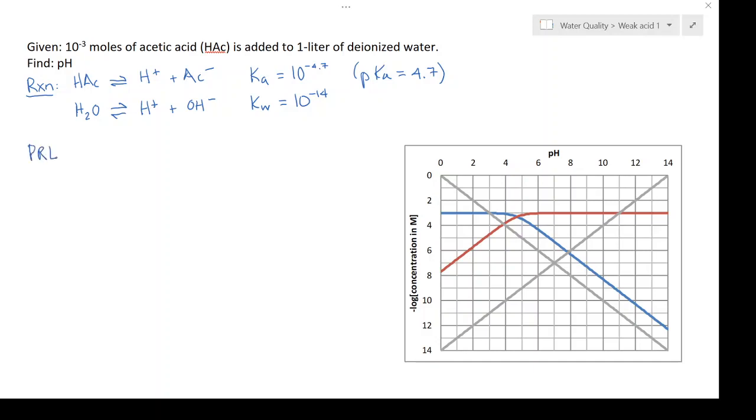To use the proton condition, first you need to write out the proton reference level. The proton reference level is what you start with in the solution. Because this is water chemistry, we always start with water, so that's always going to be in your PRL.